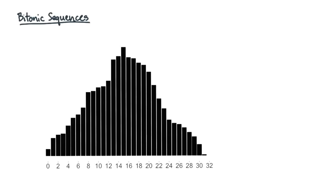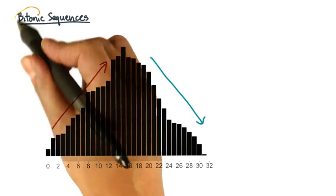Here's a sequence of 32 values shown schematically. Notice how it starts increasing and then decreases. Such a sequence is called bitonic.